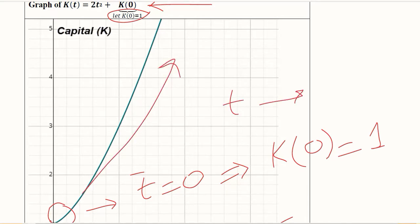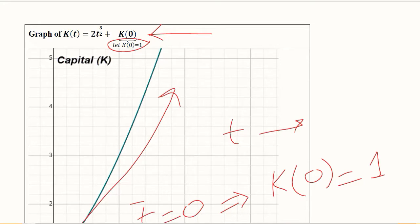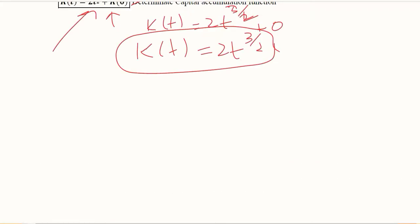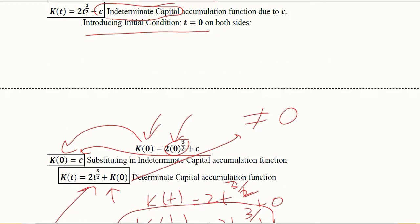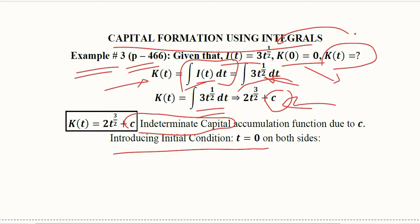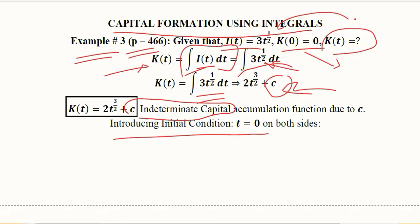It is that variable part of the graph that is explaining this positive slope and a positive relationship between the time variable and the level of capital. So in this way, a capital function is developed, and this is how we solved it by using the integrals. Thank you.